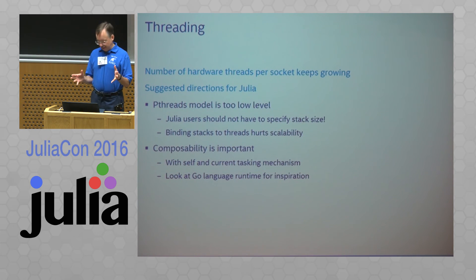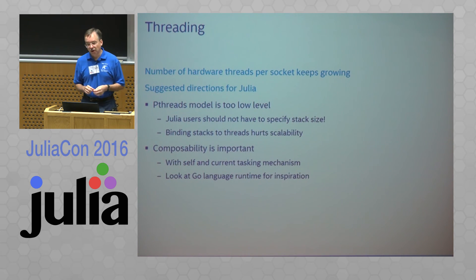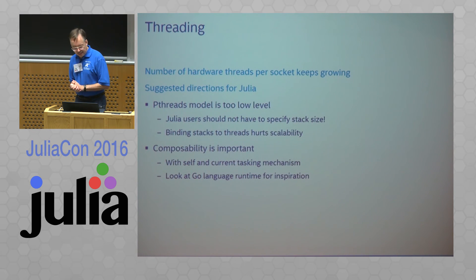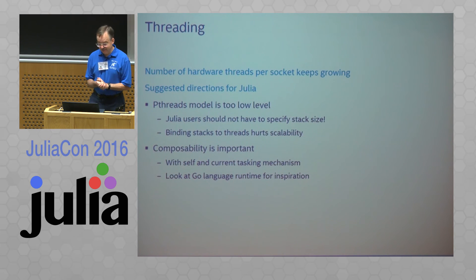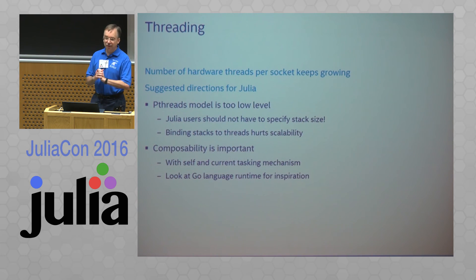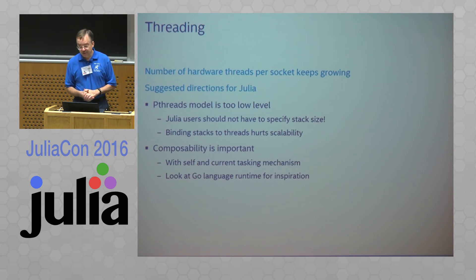Composability is important: if you're composing black boxes that each have internal threading, you want them to run efficiently together. This is something where OpenMP falls flat. It also has to compose with the current Julia tasking mechanism, and that's not an easy problem. For inspiration on state-of-the-art threading, look at the Go runtime — they've rethought everything from scratch. They did throw out compatibility with some other languages as part of that process, but the result is very inspiring.